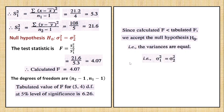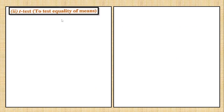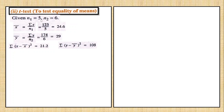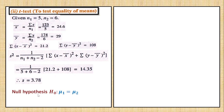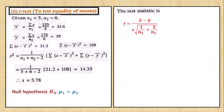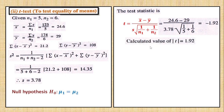Second: T-test to test equality of means. The given data is the same. The pooled standard deviation S is calculated. S² equals the formula with given values applied, giving 14.35. Taking the square root gives S. The null hypothesis is mu1 equals mu2, meaning the two population means are equal. The test statistic is t equals (x̄ − ȳ) divided by S times root of (1/n1 + 1/n2). Applying values gives negative 1.92, but taking the modulus, the calculated t value is 1.92.